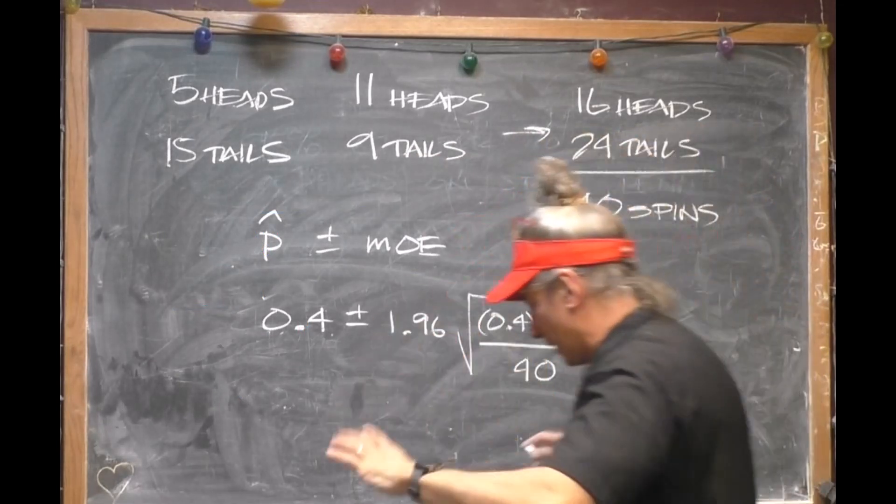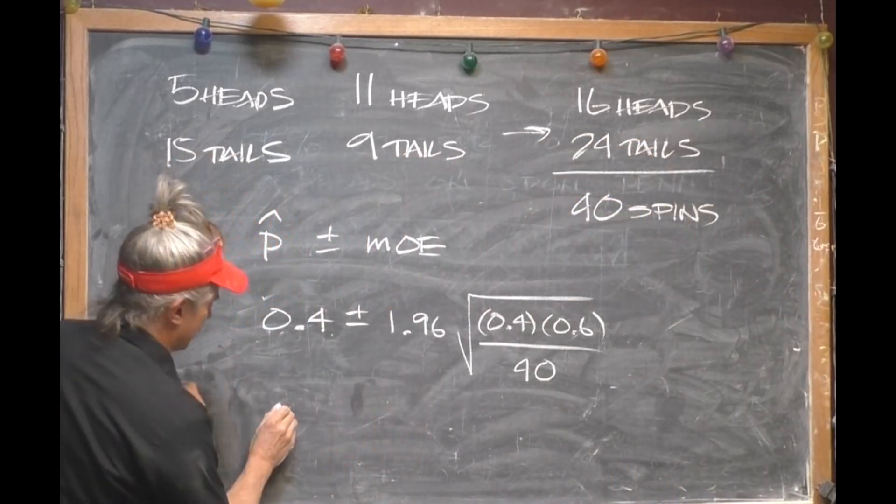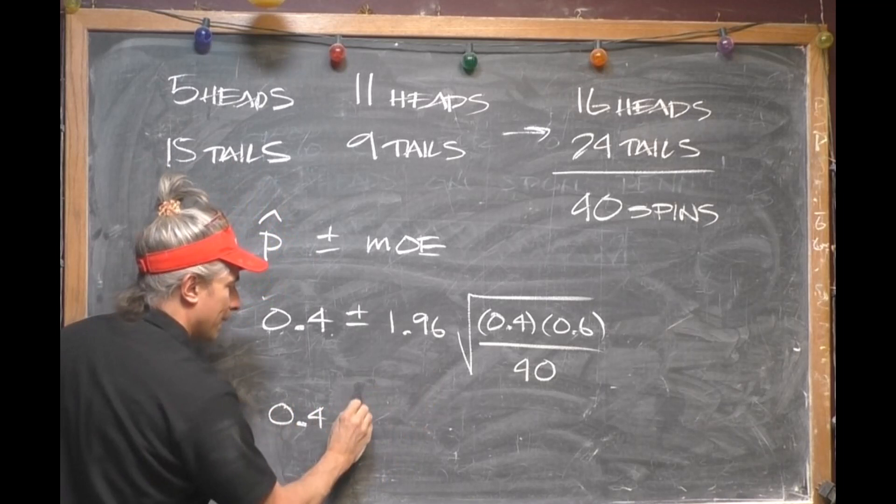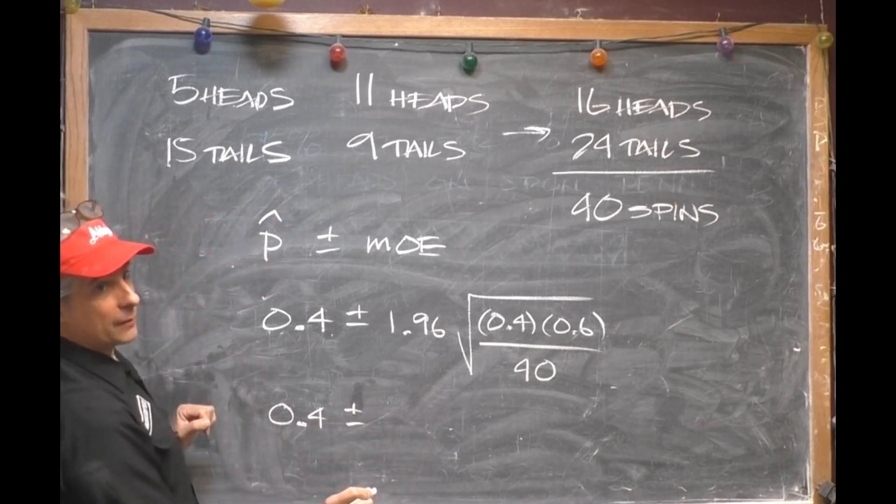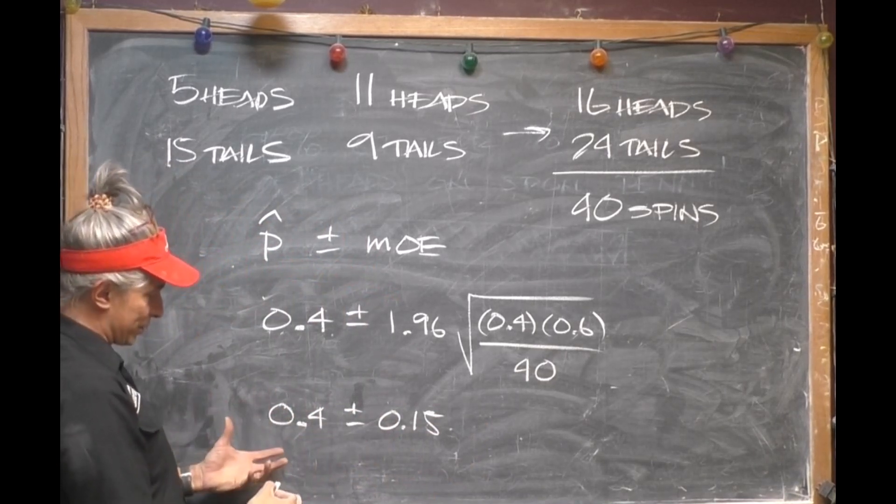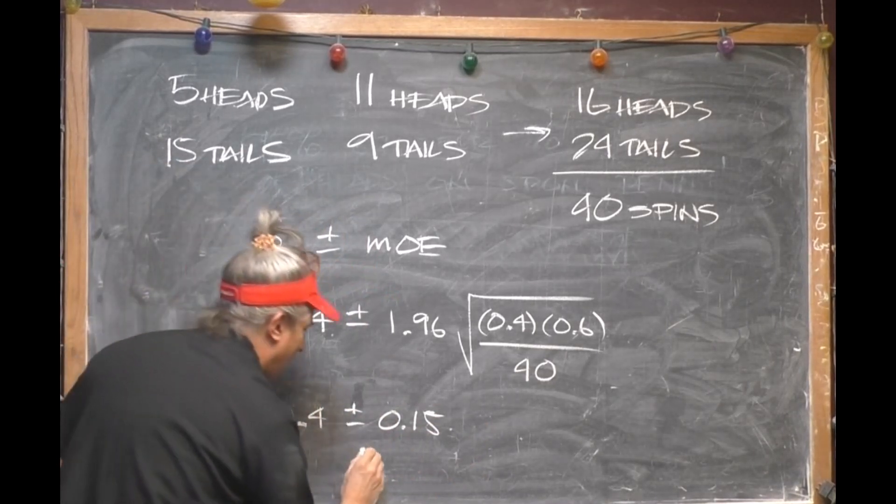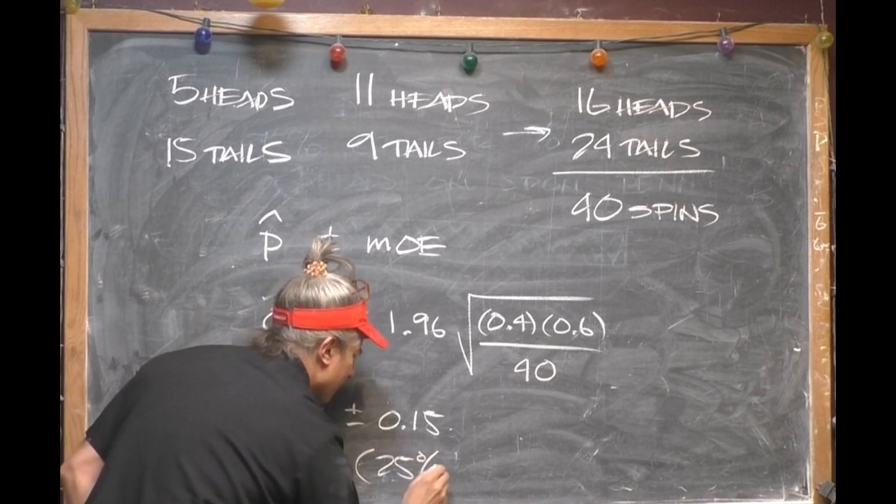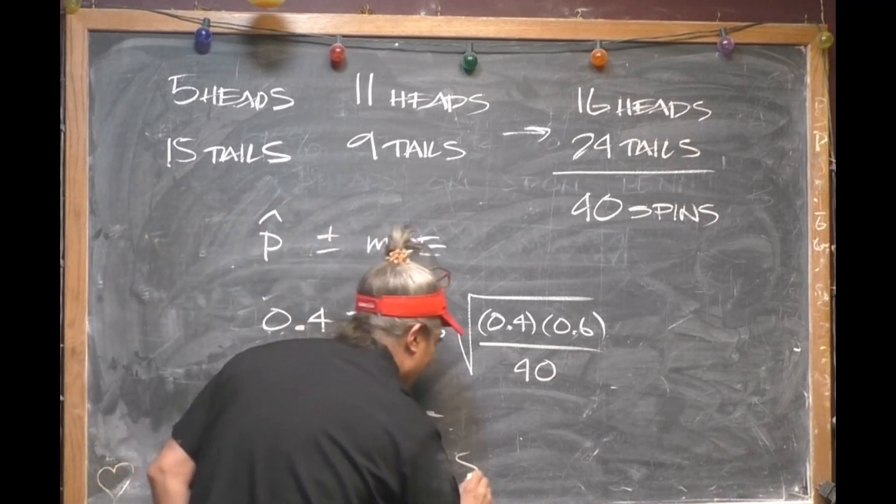Okay, my friends. So now, we know that our confidence interval is going to be 0.4 plus or minus 15%. So if we add and subtract 15% from 40%, if we go down, that's 25%. And if we go up, that's 55%.